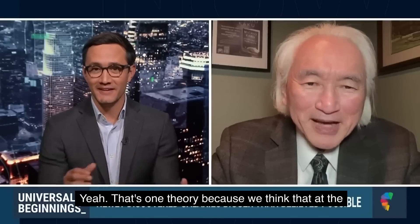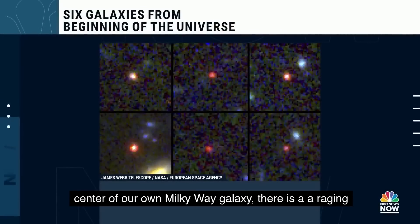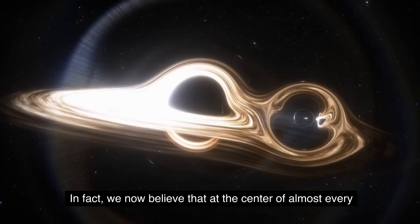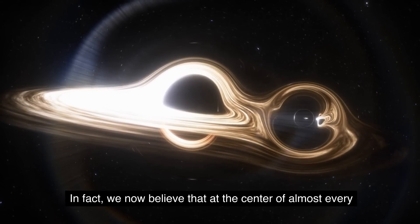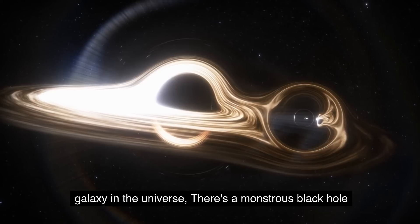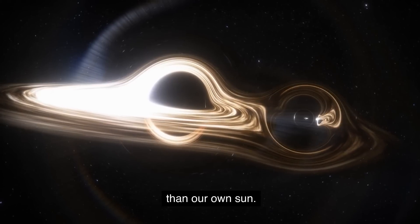I'm sorry. You're saying that these galaxies, these six galaxies that look kind of like galaxies are actually black holes? Yeah, that's one theory, because we think that at the center of our own Milky Way galaxy, there is a raging black hole that is two to three million times more massive than our sun. In fact, we now believe that at the center of almost every galaxy in the universe, there's a monstrous black hole that could be millions to billions of times more massive than our own sun.